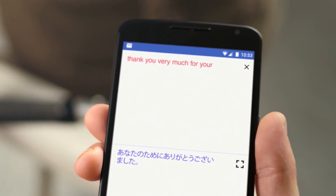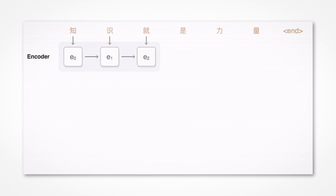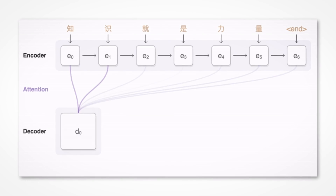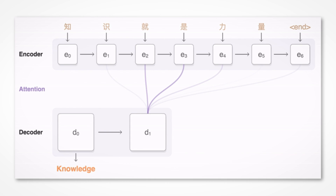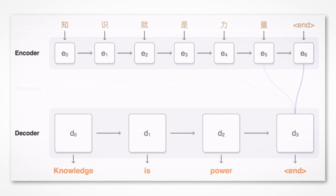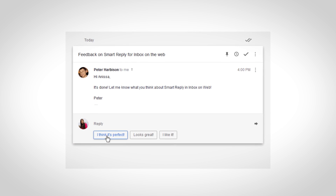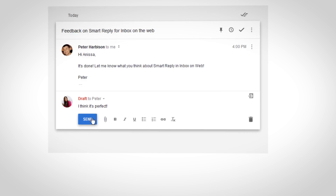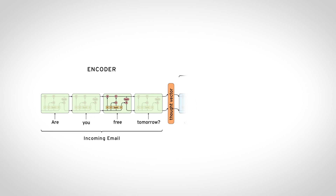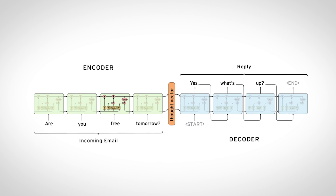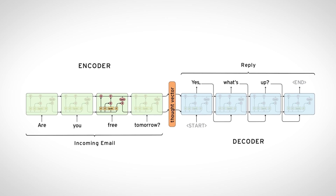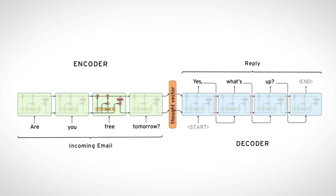Towards the end of last year, we actually rolled out a completely new translation system that was based on deep neural nets. In Gmail, we were actually able to roll out a TensorFlow model that, by understanding the context of the message you just received, we can predict likely replies, and this is a feature we call Smart Reply.